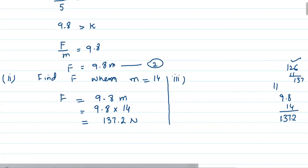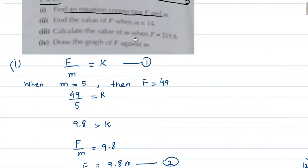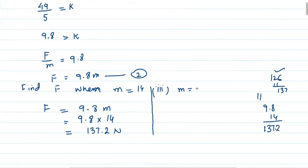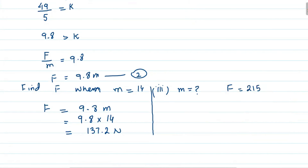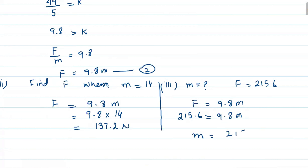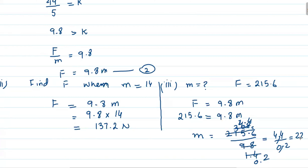Using the equation and the value of the constant number, we can find F equal to 9.8M. When we have F equal to 215.6, then M value will be 215.6 divided by 9.8. So divide, and this value will be 22.3.